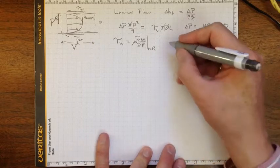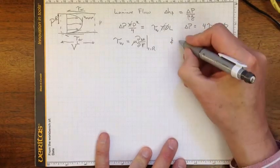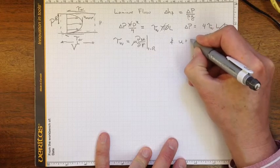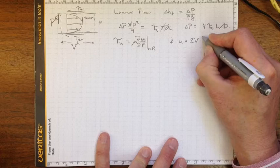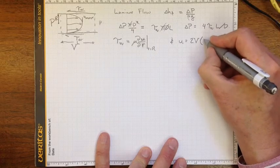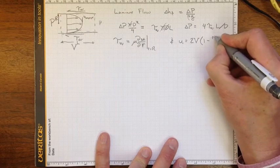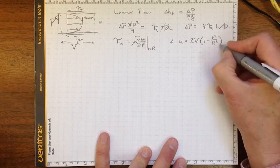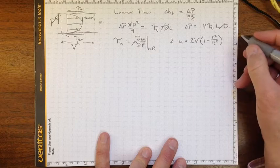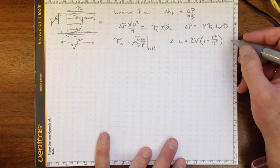And we also know that the velocity is two times the average velocity times one minus r squared over capital R squared, from our solution previously for Navier-Stokes for steady fully developed flow.